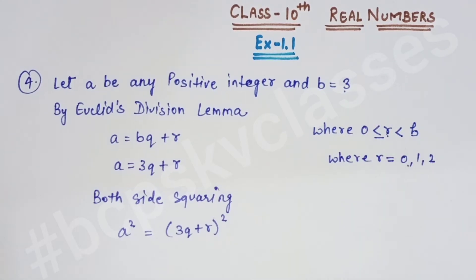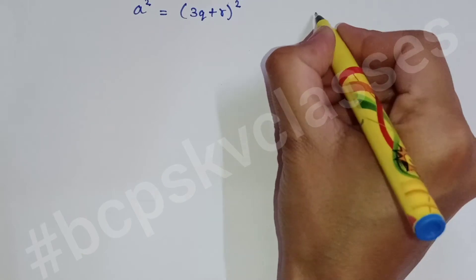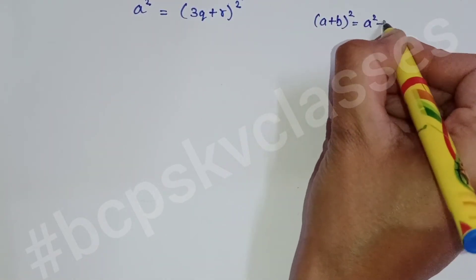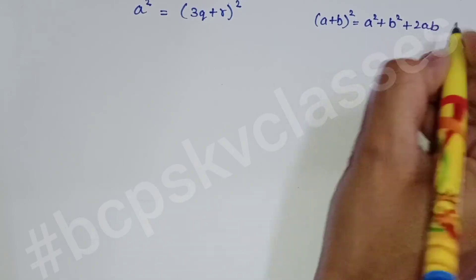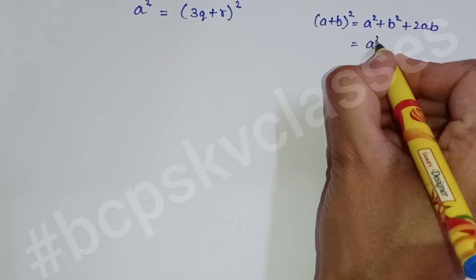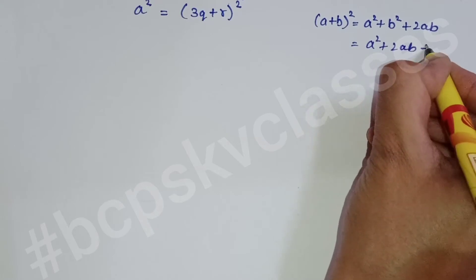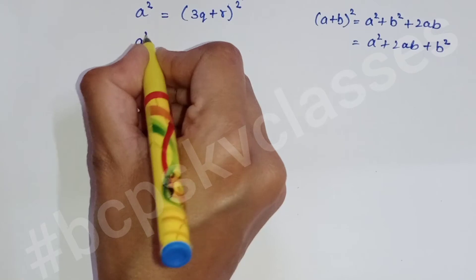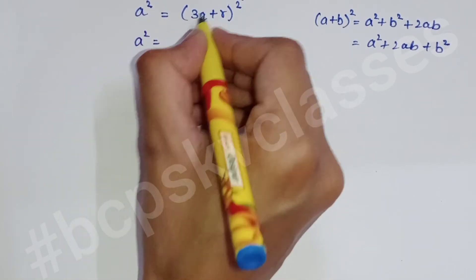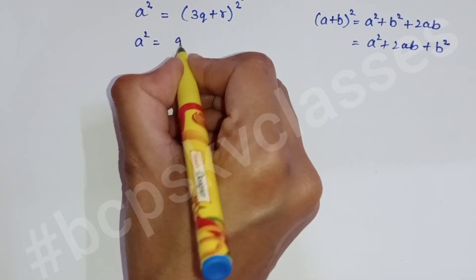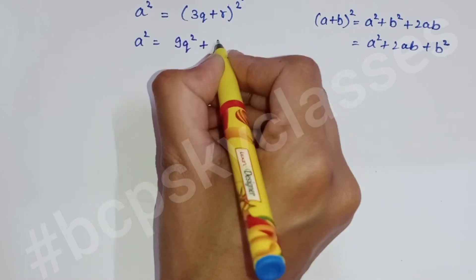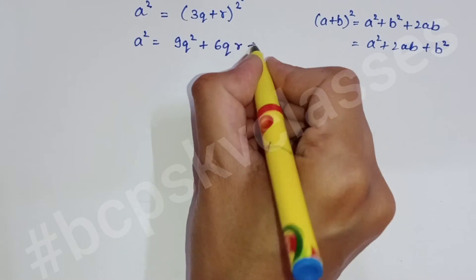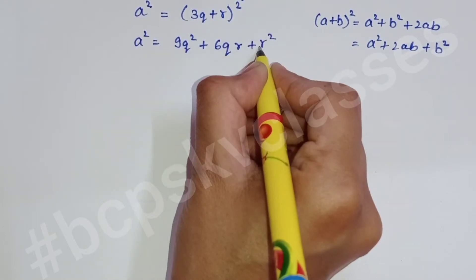Remainder always 3 se chhote hi hote hain: 0, 1, 2. Ab (3q + r)² ko open karte hain using a² + 2ab + b² formula. To a² = 9q² + 6qr + r².